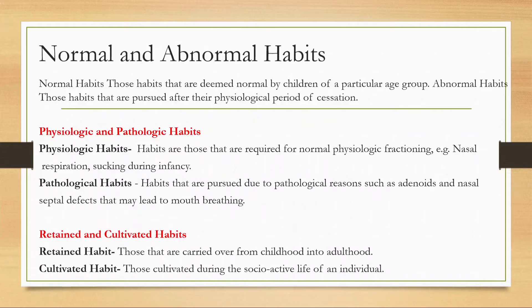For example, if a child has persistent thumb sucking even after three to three and a half years, it is called an abnormal habit. Until that period, it is considered normal.